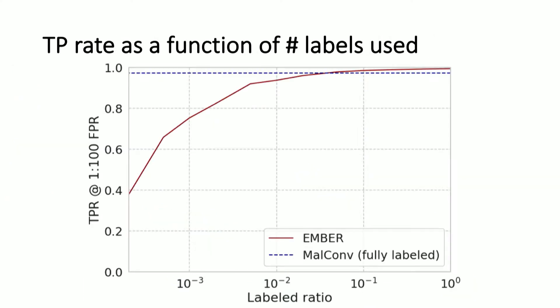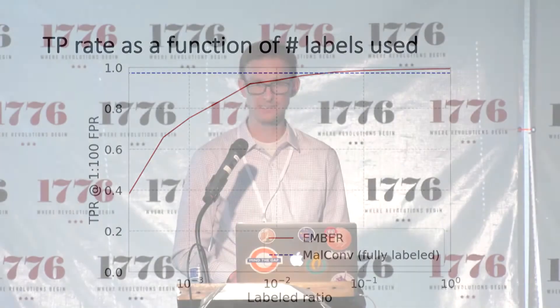On the label-hunger issue: I trained MalConv with 600,000 samples, but it turns out that if you train with 20 or 30 times fewer samples using Ember, you get similar performance. That speaks to how hungry end-to-end deep learning is for labels. So the task now is to find a way to use fewer labels and get better disentanglement of features in a deep learning scenario.